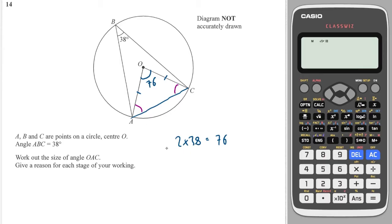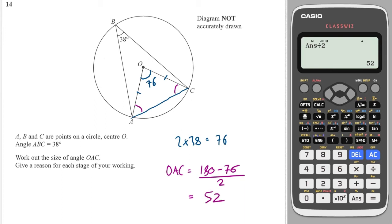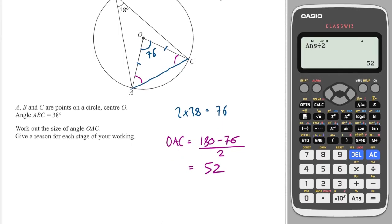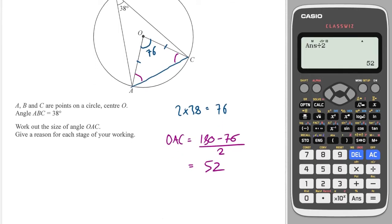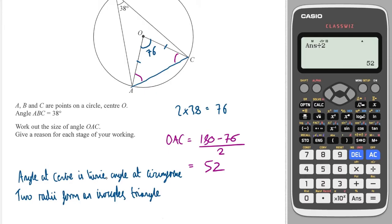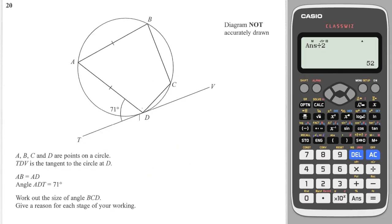So angle OAC = (180° − 76°) ÷ 2 = 52°. To get full marks I write: angle at center is twice angle at circumference, and two radii form an isosceles triangle.